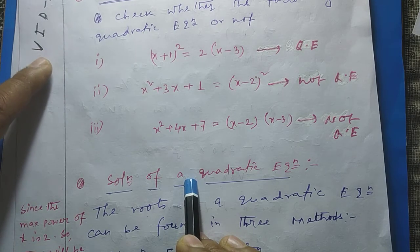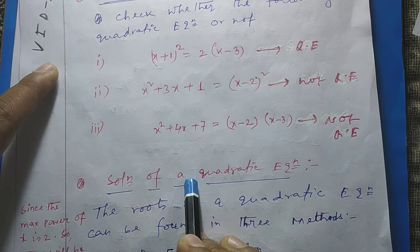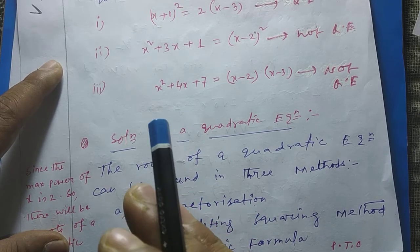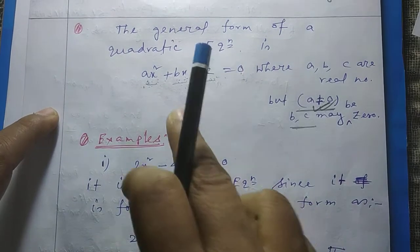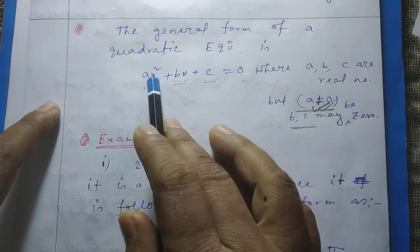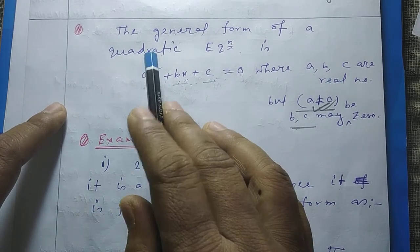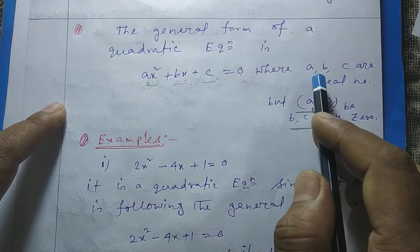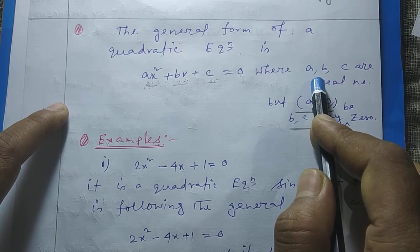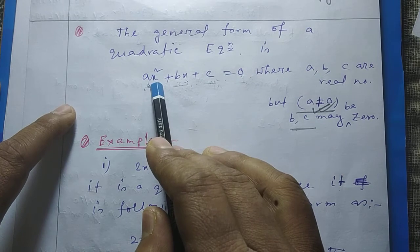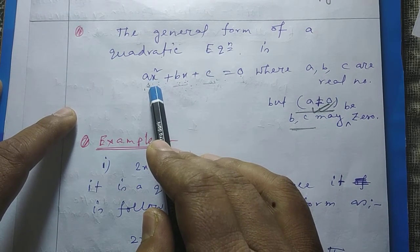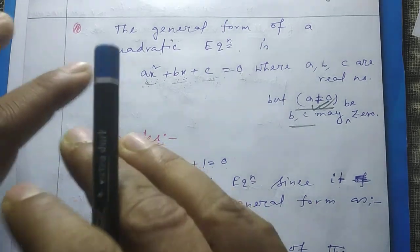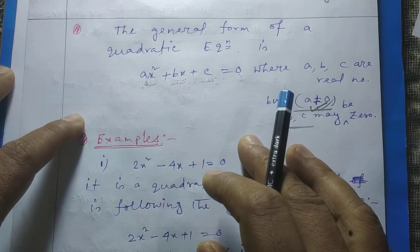Solution of a quadratic equation means we have to find the roots of the quadratic equation. But before that we have to confirm the maximum number of roots a quadratic equation can have. To understand this, let us recall the general form: ax² + bx + c = 0, where a, b, c are all real numbers and a is not equal to 0. Here the maximum power of x is 2, so a quadratic equation will have a maximum of 2 roots, not more than 2.